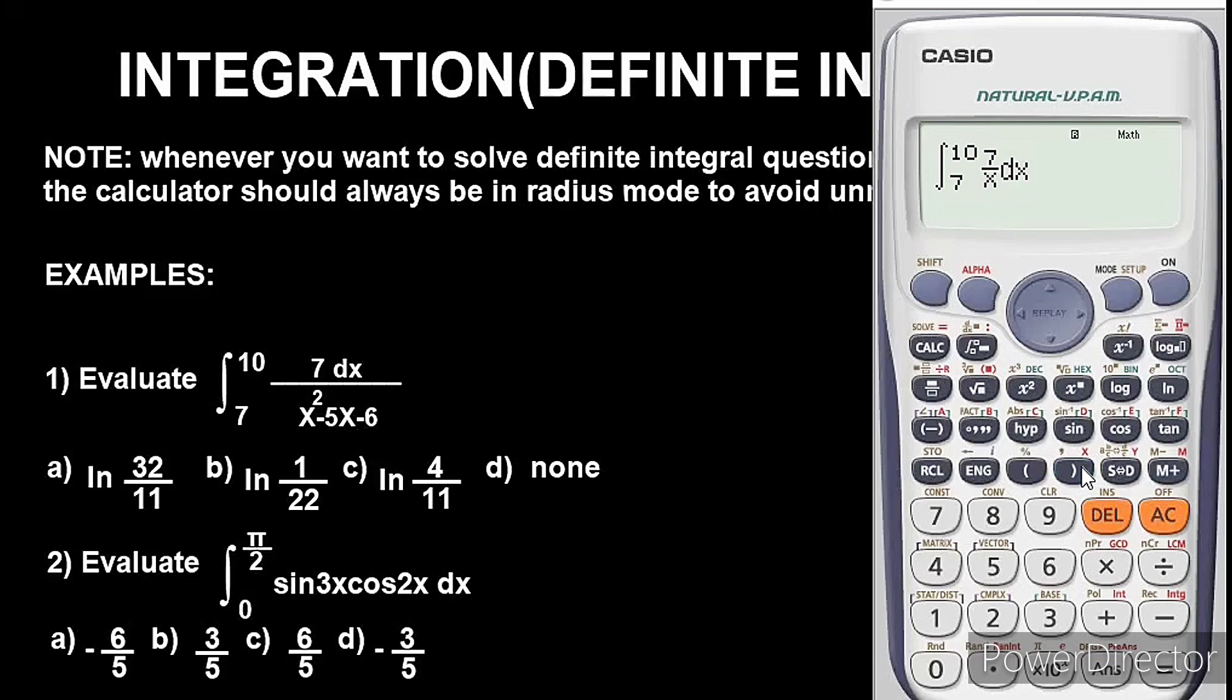You will have to press alpha first before pressing x, very important, so take note of this. So here we have x squared minus 5x, alpha x minus 6.